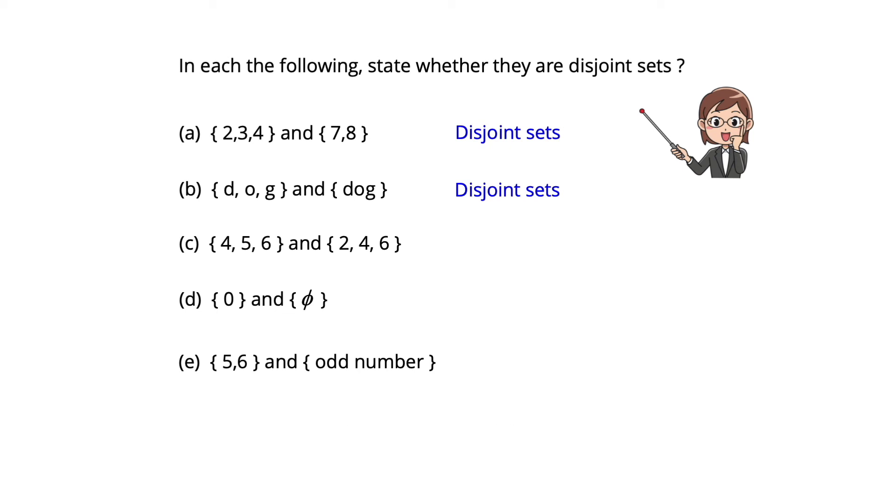C, they are joint sets because they have two common elements, 4 and 6.